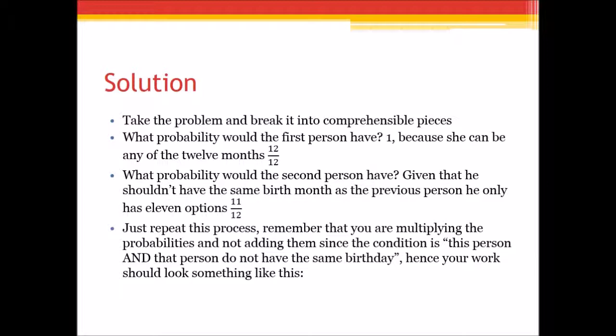The first person is anybody, any month, 12 out of 12. The next person 11 out of 12. Next person 10 out of 12. So you keep this going and you can see that at minimum you need at least five people. You have 12 out of 12 and then 11, 10, 9, 8. When you multiply all these together, you get 0.38.